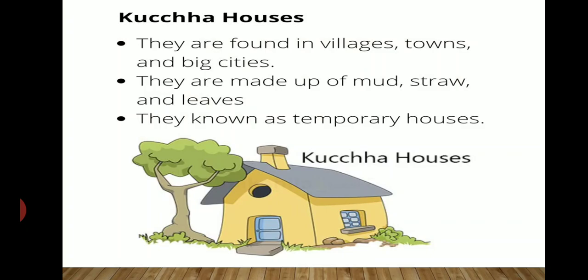Kaccha house. They are made up of mud, straw and leaves. They are known as temporary houses. They are found in villages, towns and big cities. Kaccha houses often have a sloping roof. They are not very strong.